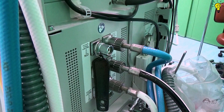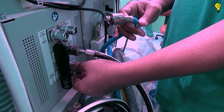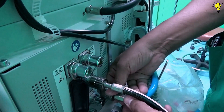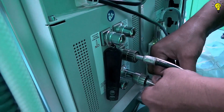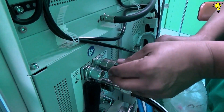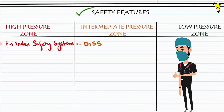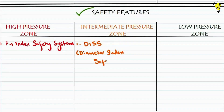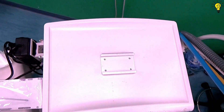This brings us to the first safety feature of the intermediate zone: the Diameter Index Safety System (DISS). If we disconnect the blue colored nitrous pipeline and try inserting it into the oxygen inlet, it simply won't fit. This is DISS — a specific pipe inlet fits only into the right gas port. Here you can see the nitrous pipeline didn't fit into the oxygen inlet. Reinserting it back into the right port, it fits perfectly. In the high pressure zone we had the Pin Index Safety System for cylinders; here we have DISS for the pipelines.